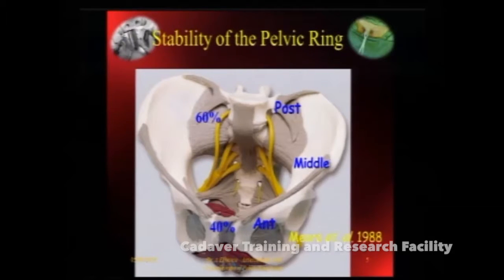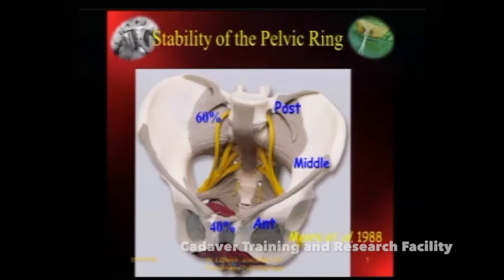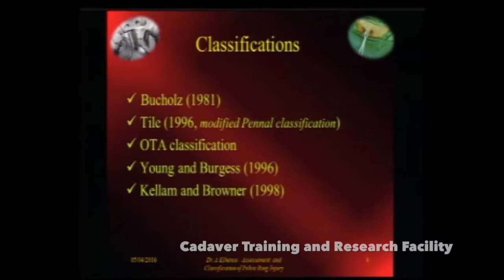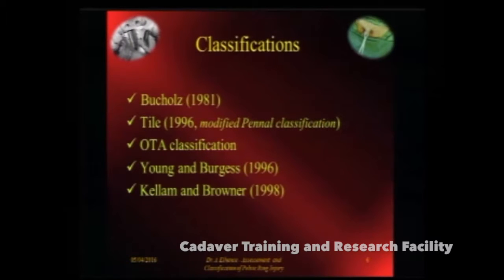Unless your posterior sacroiliac ligament is damaged, your pelvis will not go into a vertical shear. You will still have a moderately unstable patient, or a stable patient, or a partial stability. And 40% of this stability comes from the front. There are so many classification systems but no consensus amongst pelvic surgeons as to which one to use, and there is no significant inter- or intra-observer reliability on which classification to apply.